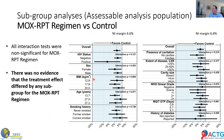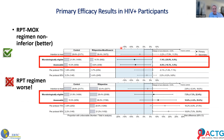Looking at subgroups, the rifapentine-moxifloxacin regimen performed quite robustly across all groups. For the HIV-positive participants, the rifapentine-moxifloxacin regimen was actually better — not significantly, but better. Unsuccessful outcomes were 22% for standard of care versus 14.5% for the rifapentine-moxifloxacin regimen. The rifapentine-alone arm was considerably worse than the standard of care.